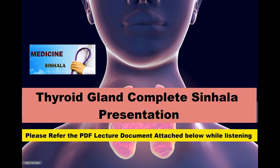The external laryngeal nerve runs close to the superior thyroid artery near the superior pole of the lobe of the thyroid gland. The inferior thyroid artery at the lower pole of the gland is very closely related to the recurrent laryngeal nerve.